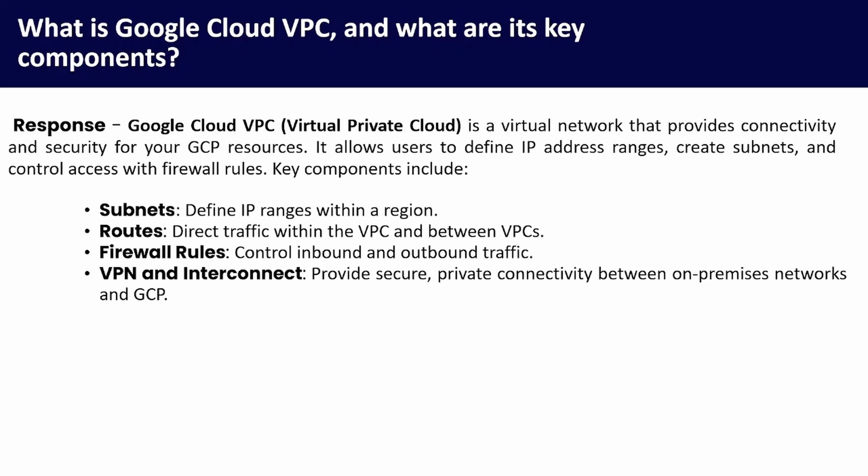Key components of VPC include: subnets, which define IP ranges within a region; routes, which direct traffic between the VPC and between VPCs; firewall rules, which control inbound and outbound traffic; and VPN and Interconnect, which provide secure private connectivity between on-premises networks and GCP.